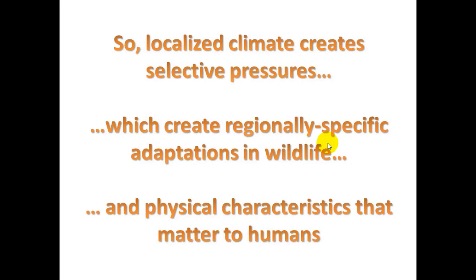Generally we have localized climate which creates selective pressures, which create regionally specific adaptations in wildlife and physical characteristics that matter to humans. For an area that gets a lot of rain, we're going to find a lot of vegetation that thrives under that condition, but selective pressure would not favor drought-resistant plant species. Similarly, an amphibian that likes a moist area won't be found in dry deserts because the pressure of lacking water means they don't thrive there. A physical characteristic that matters to humans would be lumber from forest areas.